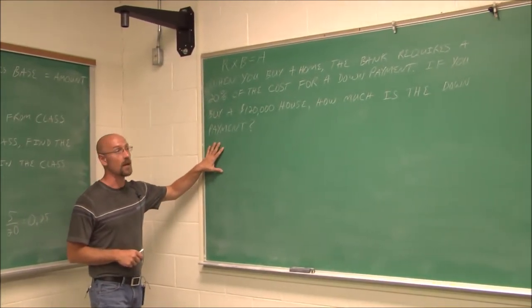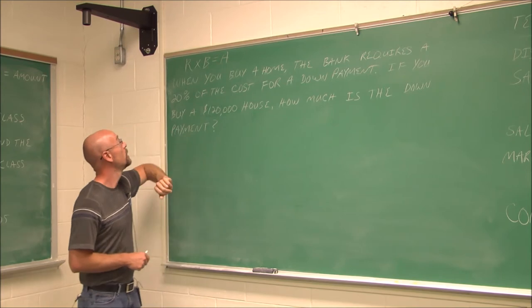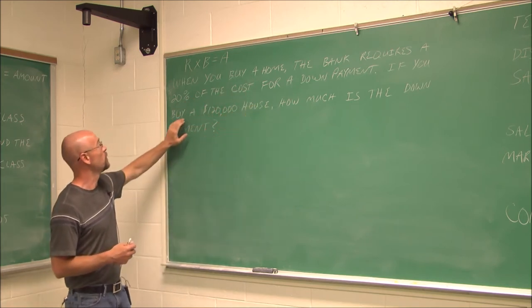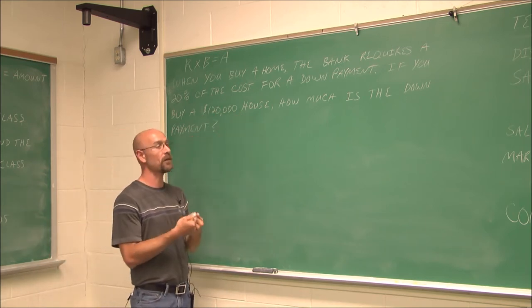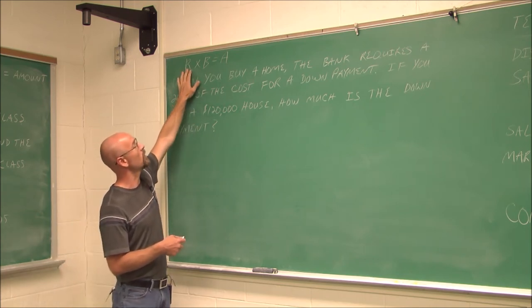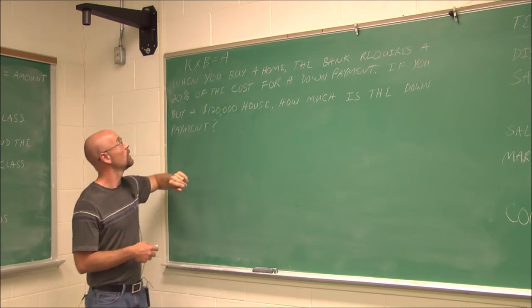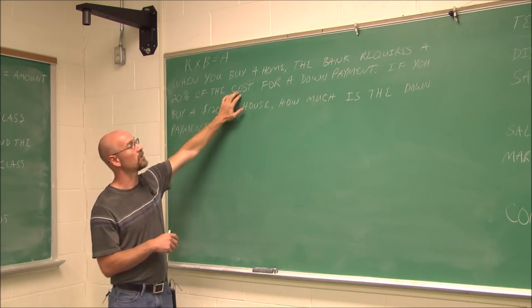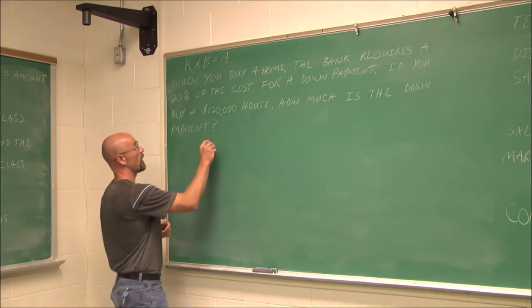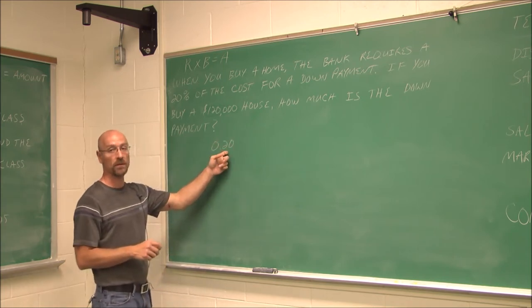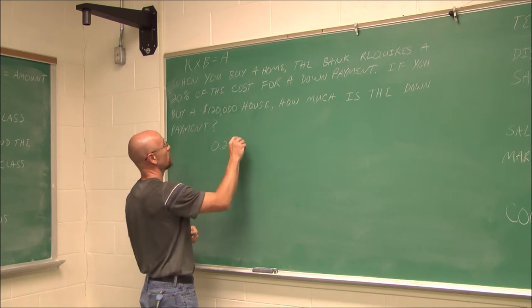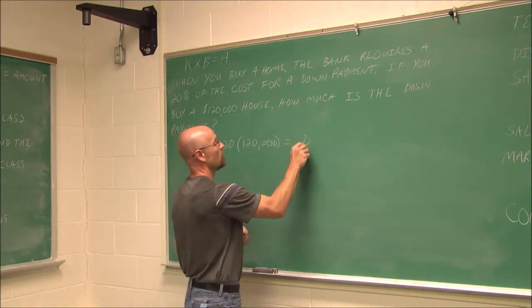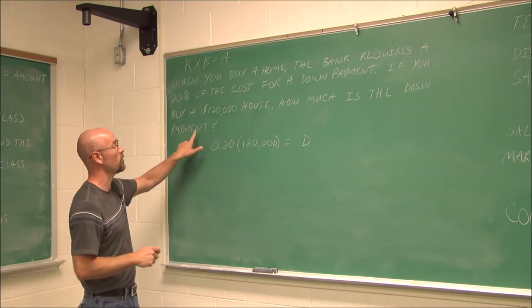Let's look at another real world example where we might use rate times base equals an amount. When you buy a home, the bank often requires 20% of the cost for a down payment. If you buy a $120,000 house, how much do you have to have up front? How much is the down payment? So we have to determine what is our rate, what is our base, and what is the amount. We know our rate. That's our percent given as a percent of the cost. So if I take this times the cost, I will know the amount I have to pay the bank. My rate is 20%, so I converted that to a decimal, of the cost, which we're told the house is $120,000, that's the cost of the house, that will be my down payment. I'm going to use the variable d.